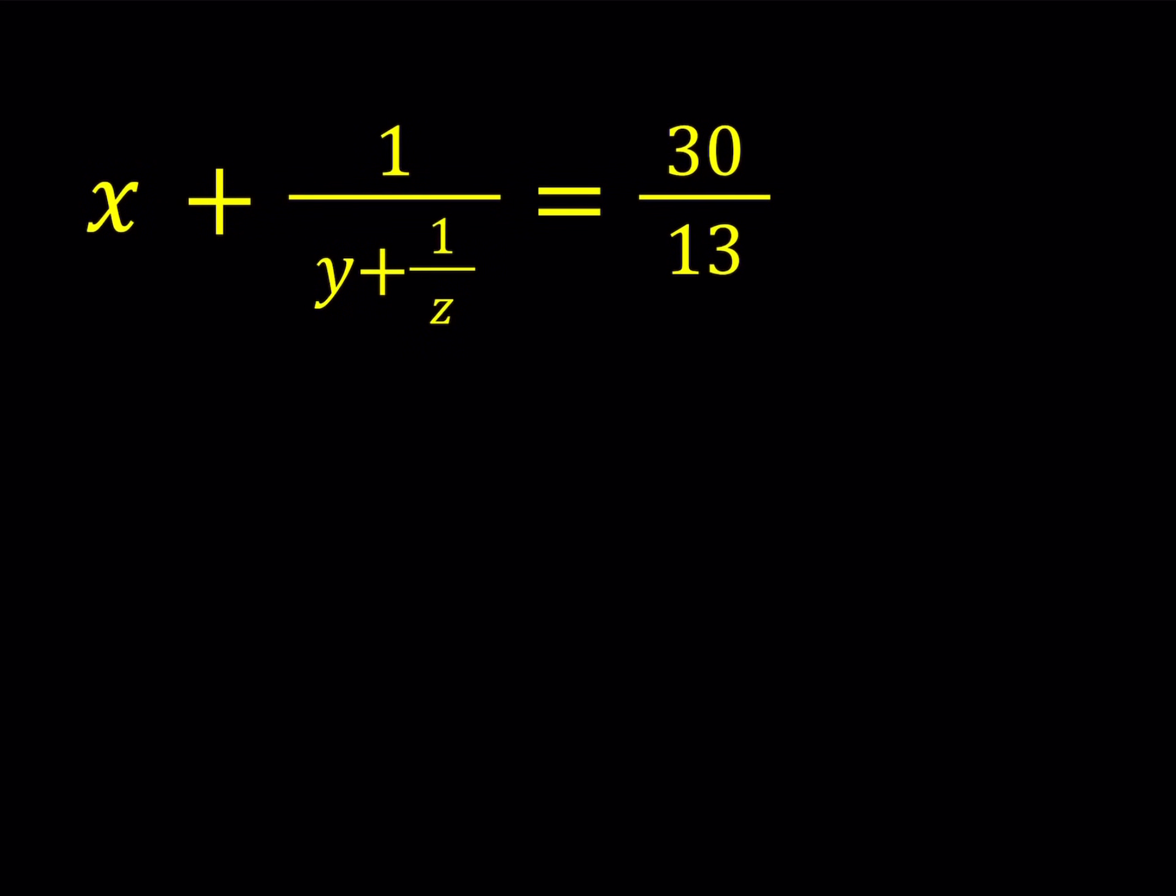Hello everyone, in this video we're going to be solving an equation for integers. We have x plus 1 over the quantity y plus 1 over z is equal to 30 over 13, and x, y, and z are integers.